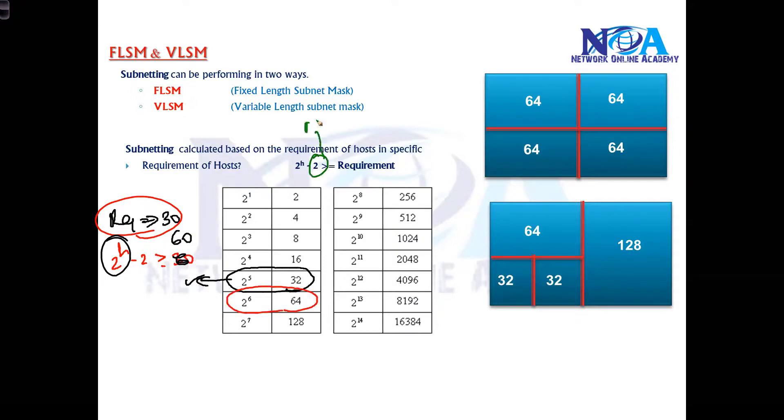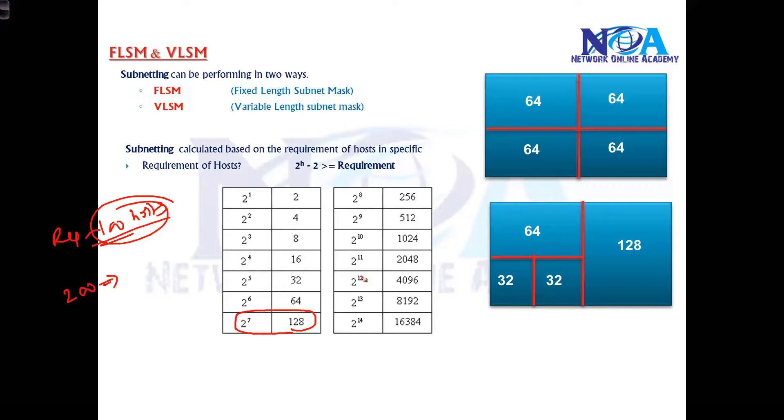Minus 2 is for network ID and broadcast ID. We'll see this when we get into the calculations. Let's say if my requirement is 100 hosts - the exact 100 is not possible. The nearest possible size is 128. If you require exact 200 hosts, exact 200 is not possible. You have to go with 2 to the power of 8, that is 256. When you do subnetting, the exact size requirement is not possible. You have to go with these - they are the only possible sizes you can go with.